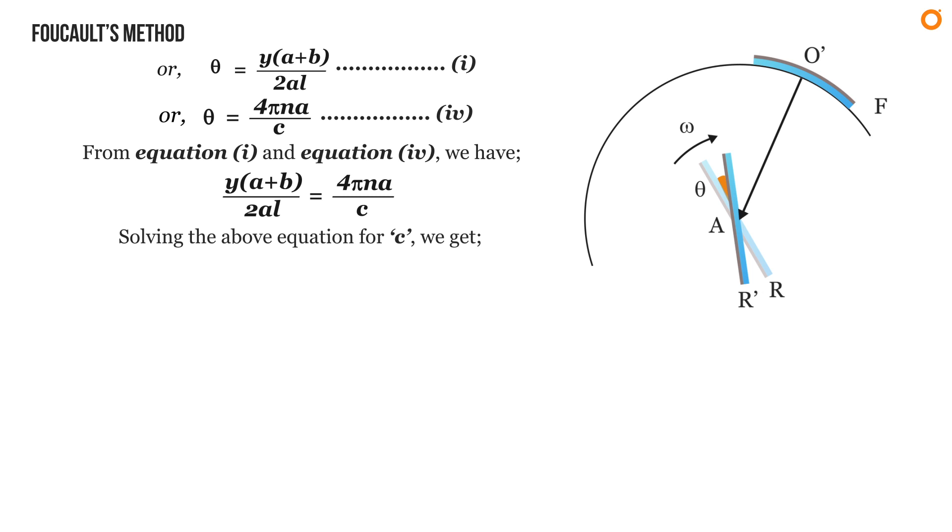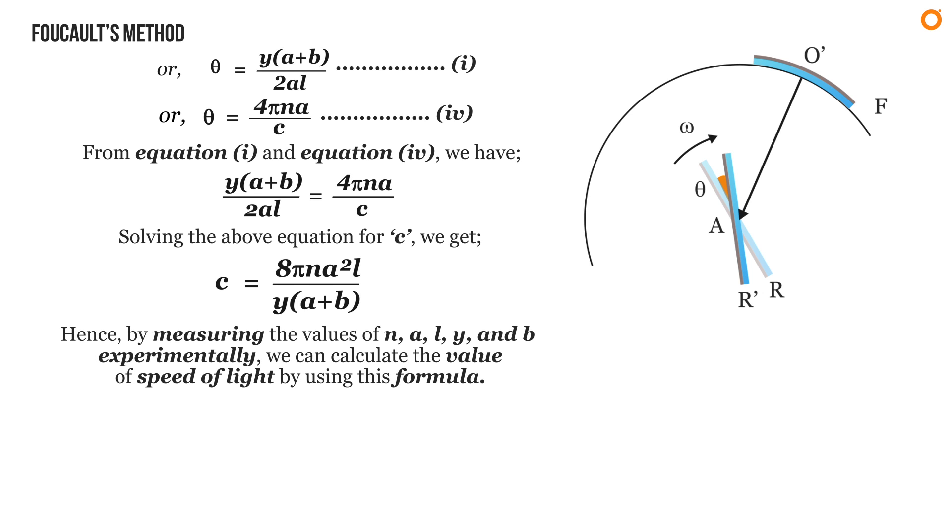Solving the above equation for c, we get c equals 8 pi n A squared times L divided by Y times (A plus B). Hence by measuring the values of n, A, L, Y, and B experimentally, we can calculate the value of speed of light using this formula.